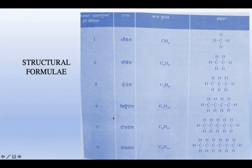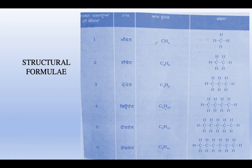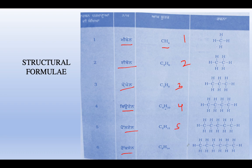Our first topic is Structural Formula. There is a formula you will remember. Methane has 1 carbon, ethane has 2 carbon, propane has 3 carbon, butane has 4 carbon, pentane has 5 carbon, hexane has 6 carbon. Basically you will deal with up to hexane. So remember: meth, eth, prop, but, pent, hex — with 1, 2, 3, 4, 5, 6 carbons respectively.